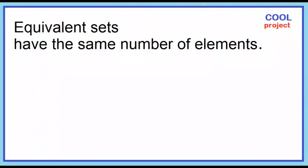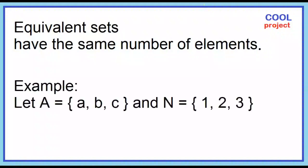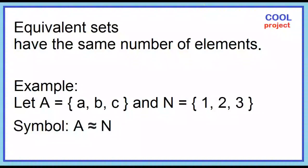Equivalent sets have the same number of elements. Example: Let A contain the elements A, B, C and N contain the elements 1, 2, 3. Set A and N have the same number of elements. Set A is equivalent to set N.